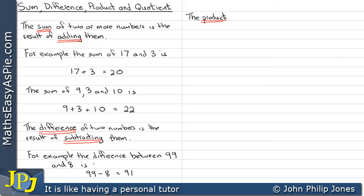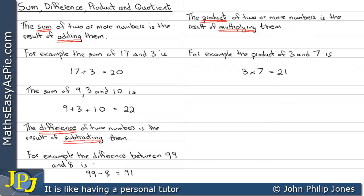The product of two or more numbers is the result of multiplying them. For example, the product of 3 and 7 is 3 times 7, which equals 21.